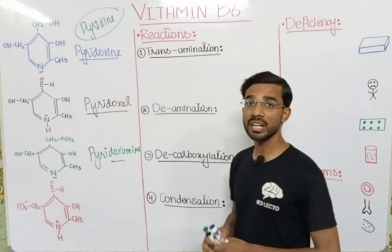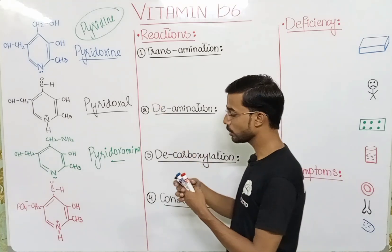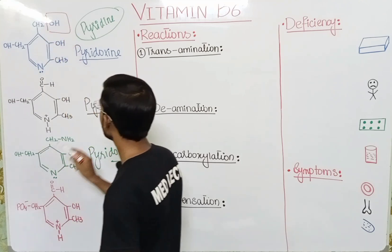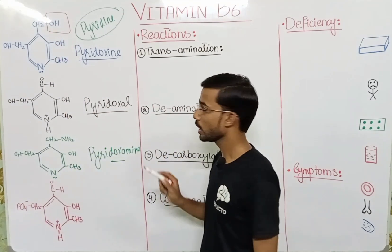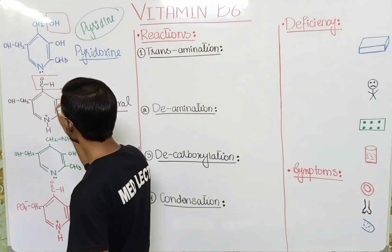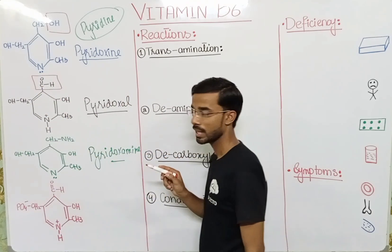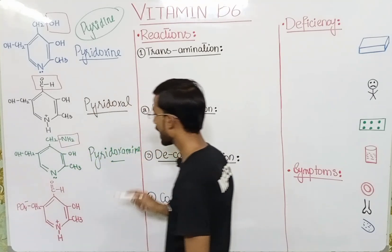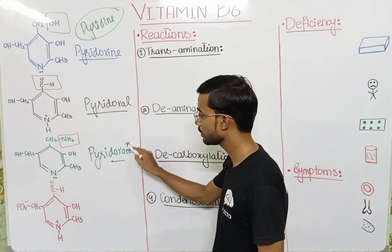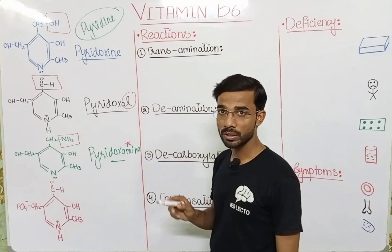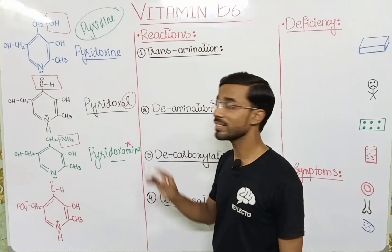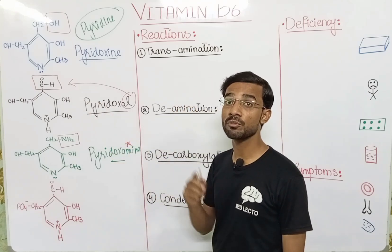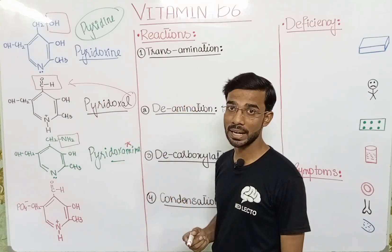You will see just the difference of the functional group. In Pyridoxine, you will see the attachment of a hydroxyl group. In Pyridoxal, you will see the attachment of an aldehyde group. And in Pyridoxamine, you will see the attachment of an amino group. As the name indicates, 'amine' refers to an amino group, and when a compound name ends with 'al,' that means it has an aldehyde group. So the name indicates what functional group is present in the compound.